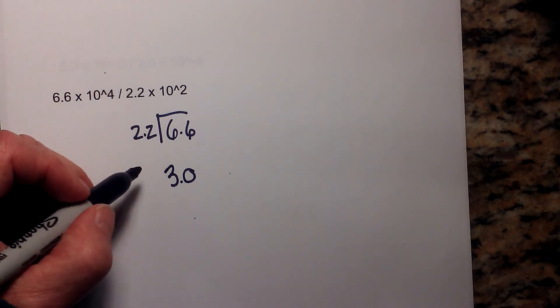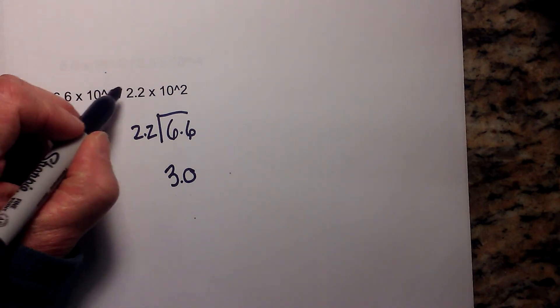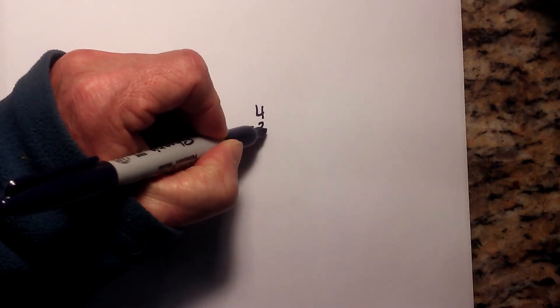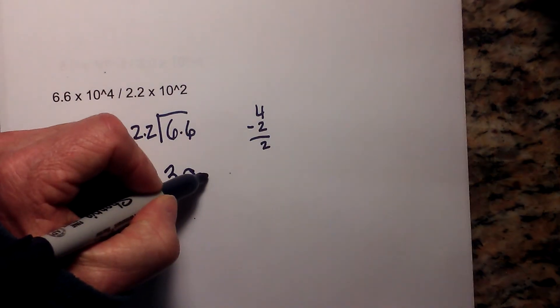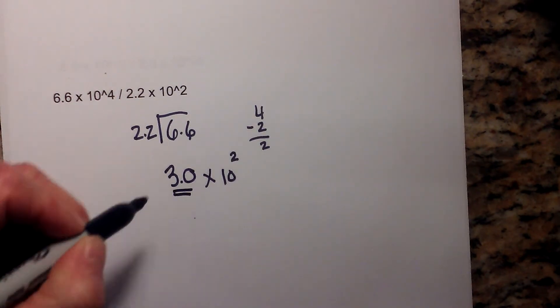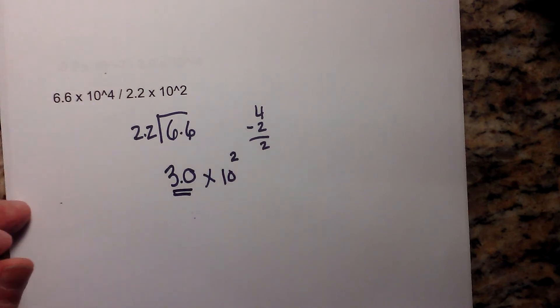Next I will subtract the exponents, so 4 minus 2 is 2. That is 3.0 times 10 to the second, and this is in correct form because 3 is between 1 and 10.